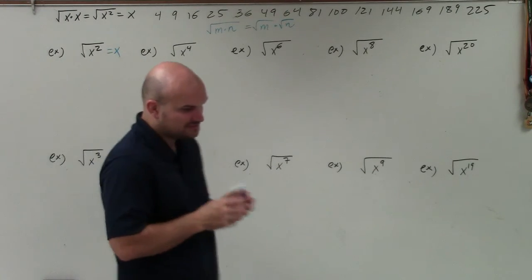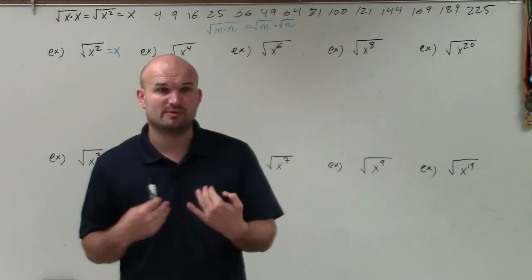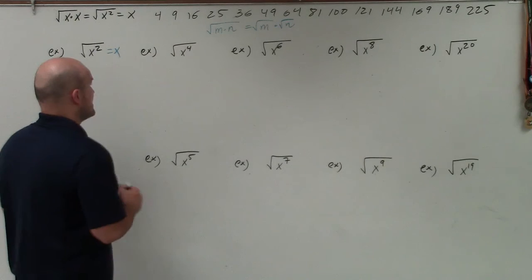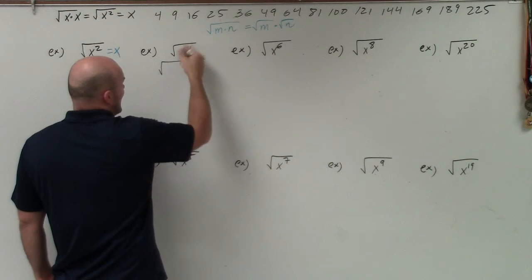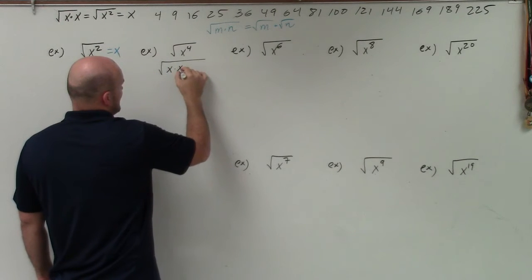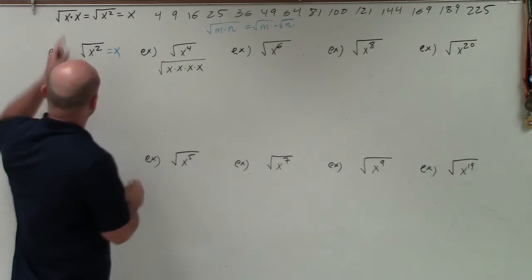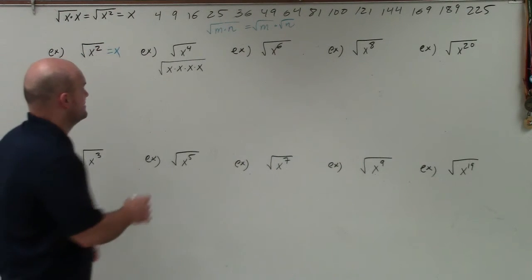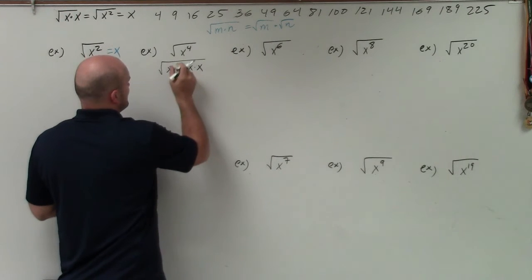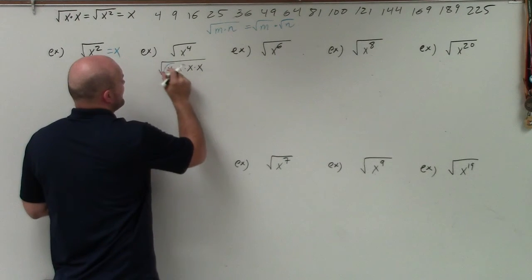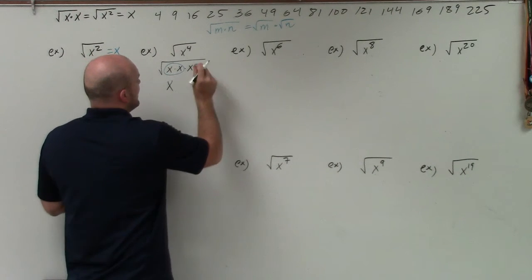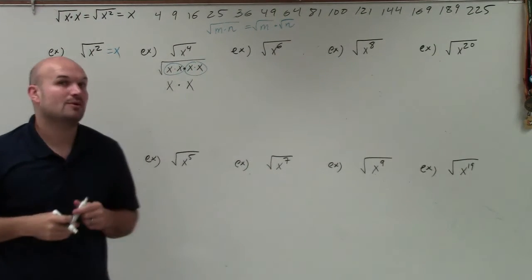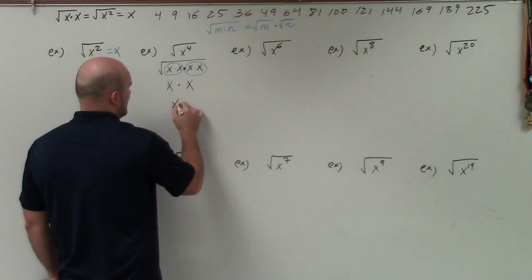Using prime factorization — just like with numbers, where we rewrote the number as a product of its primes — we can write an algebraic expression as a product of its primes. x to the fourth is just x times x times x times x. Going back to our definition, the square root of x times x is just equal to x. So the square root of x times x equals x, and the square root of the other x times x equals x. They're still separated by multiplication, so x times x gives us x squared.